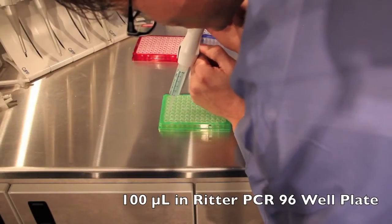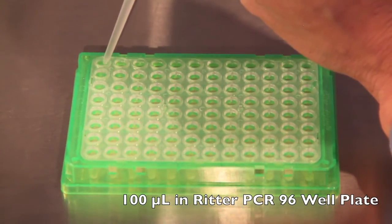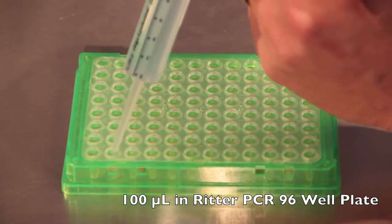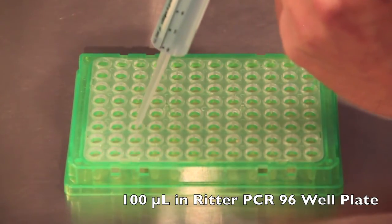Now by switching to a 10 mil syringe, the unit has enough volume and enough resolution to dispense 100 microliters into each well of a 96-well PCR plate.